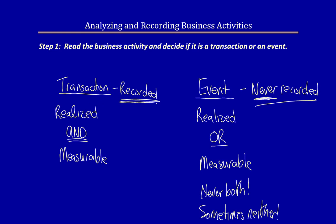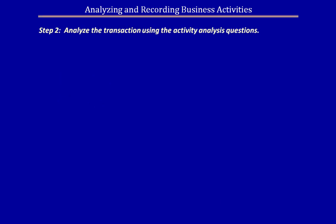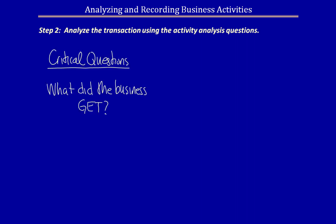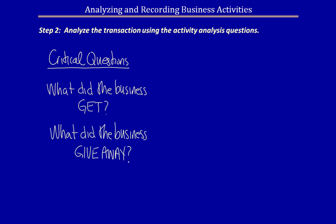Let's move on to step two. Analyze the transaction using the activity analysis questions. There are two critical questions that you should ask yourself every time you analyze the impact of a business transaction. Remember, step one was to decide if it is a transaction or an event — if it's an event, we don't move forward to step two. The two critical questions are: what did the business get, and what did the business give away?